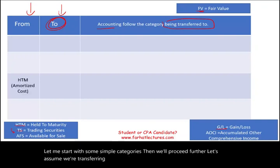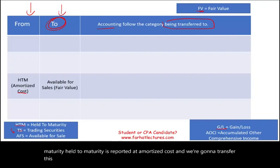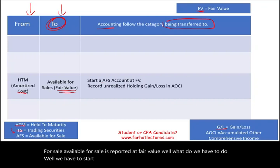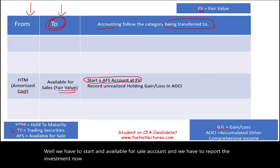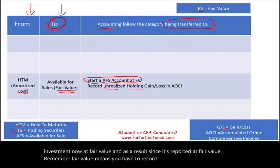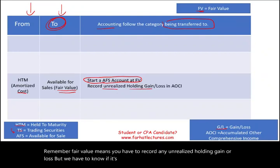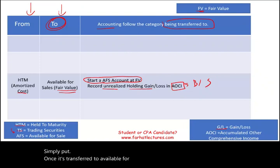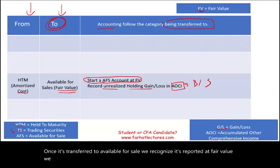Let's assume we're transferring an investment from held to maturity, which is reported at amortized cost, to available for sale. Available for sale is reported at fair value. So we have to start an available for sale account and report the investment at fair value. As a result, we have to record any unrealized holding gain or loss — but since it's available for sale, that unrealized holding gain or loss goes into AOCI and sits on the balance sheet.